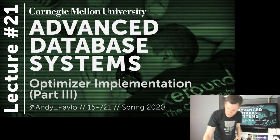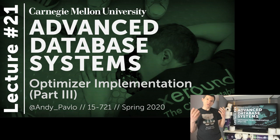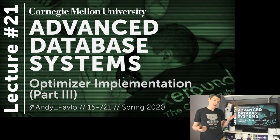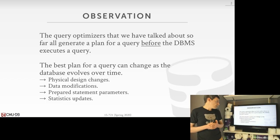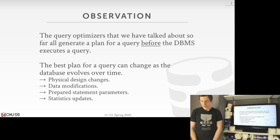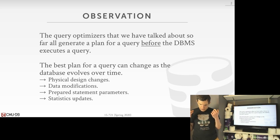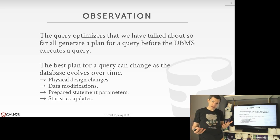The type of optimizers we've talked about so far have been classic query optimizers: the query shows up, we parse the SQL, run it through the optimizer, and generate a plan before we even begin executing the query. This is how most query optimizers work — obviously you can't run the query without a query plan, so you have to put it through the optimizer. But the challenge is that what we think is the best plan during this optimization phase may actually be incorrect.